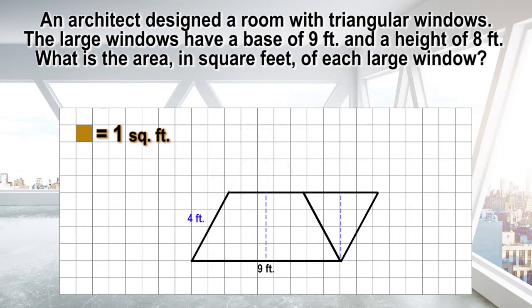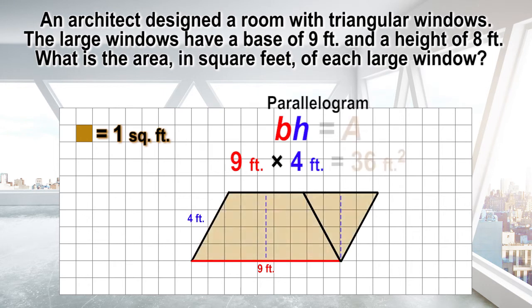The formula to calculate the area of the parallelogram would be the base, 9 feet, times the height, 4 feet, equals 36 square feet.